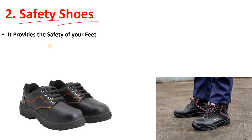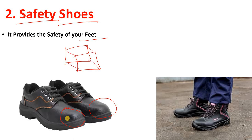Next is safety shoes. It provides safety of the feet. In the toe area of safety shoes there is a very hard metal. Suppose if there is any heavy object which falls on your feet and you do not have safety shoes, it may injure your feet. The feet is a very crucial part of our body. Safety shoes help prevent a serious foot injury, as many times in industry some heavy object just falls down on your feet.